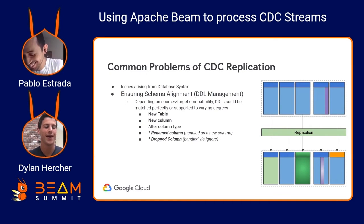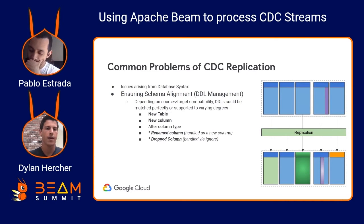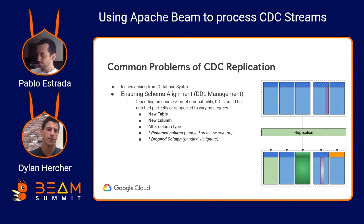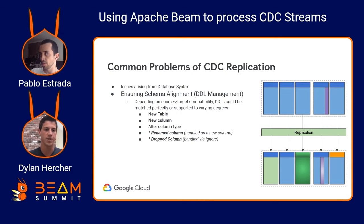We're also going to touch on ensuring schema alignment, which is really DDL management. We'll spend a good amount of time talking about how we manage DDLs in Beam. Depending on what type of DDL we're talking about, there will be varying degrees of support. You'll always support new tables and new columns, and then have some custom design for renames and drops. Generally, alter column type is not always going to be supported.